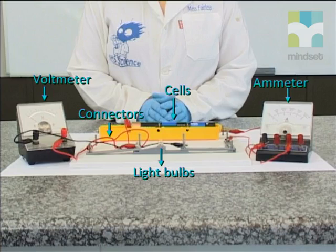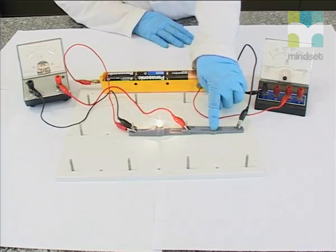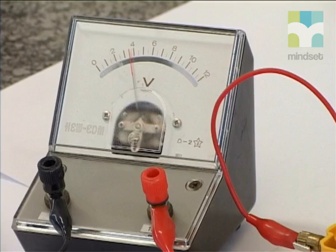In our circuit, we have three cells in series, connected to a light bulb, an ammeter, and a switch in series. We have also placed a voltmeter in parallel across the light bulb. We close the switch and take the readings: the ammeter reads 0.2 amps and the voltmeter reads 3.75 volts.